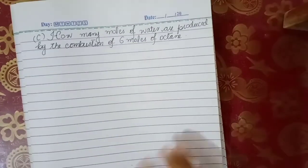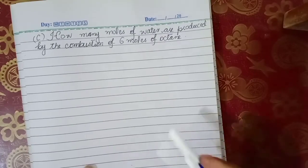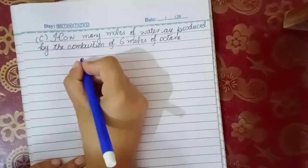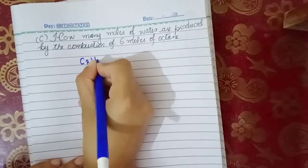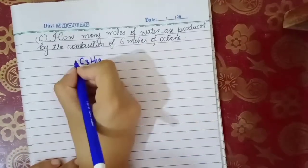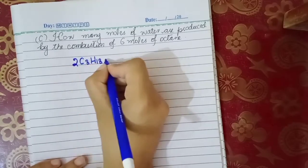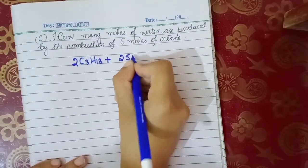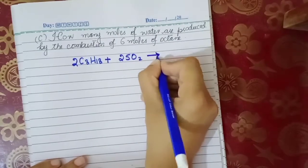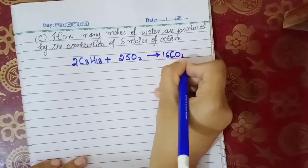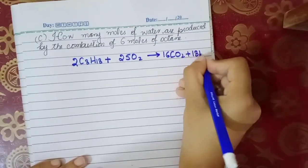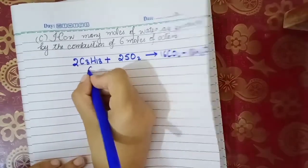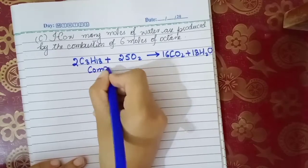Now part C: how many moles of water are produced by the combustion of six moles of octane? We are given octane and have to find moles of water. Octane is written on the left side and water on the right side. I am mentioning the equation again just as a reminder, since it is not written on this page.